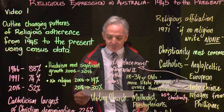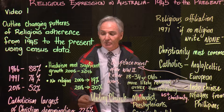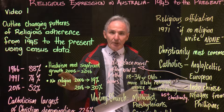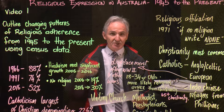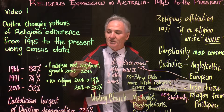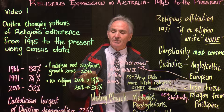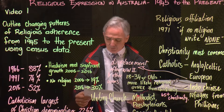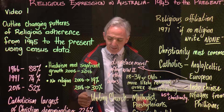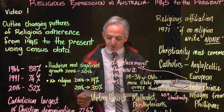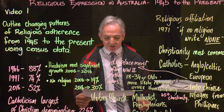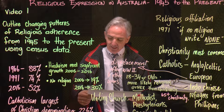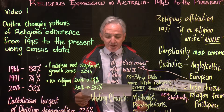Interestingly, Hinduism showed the most significant growth — even though it's not the next religion down from Christianity, between 2006 and 2016 it showed the most growth. Australia is increasingly a story of religious diversity, with Hinduism, Sikhism, Islam, and Buddhism all increasingly common religious beliefs.